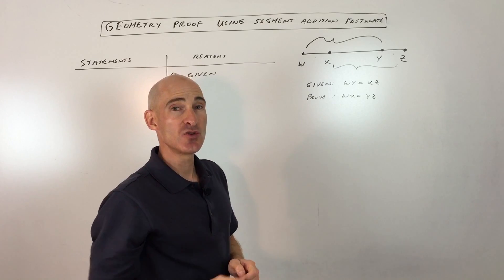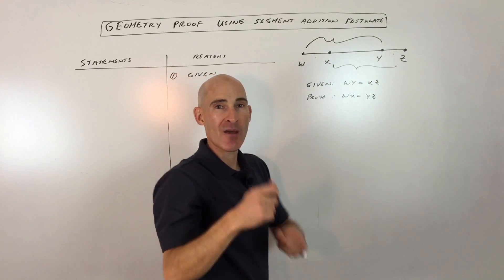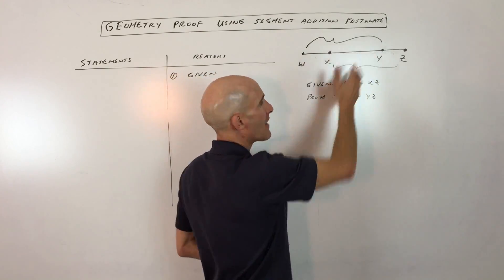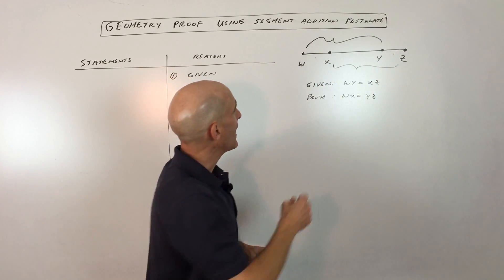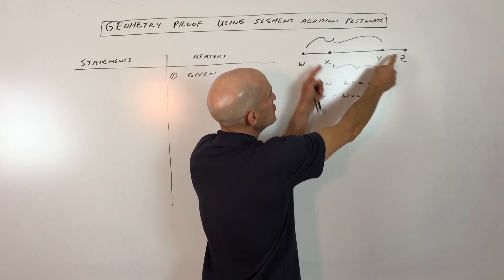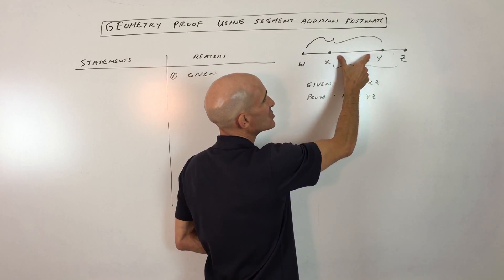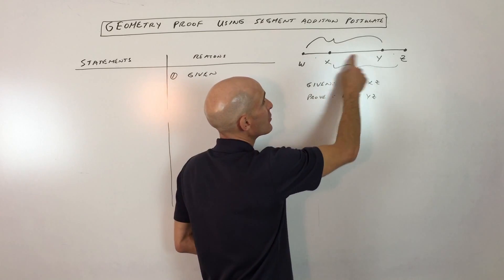My suggestion to you is that when you're doing these proofs, try to jump into that diagram and mark it up so that you can see what's happening. You don't have to remember it while you're doing the proof. You can just visually look at it. Now, what you can see is that these two segments that are congruent or equal, they overlap. And what they share in common is this segment here, XY.